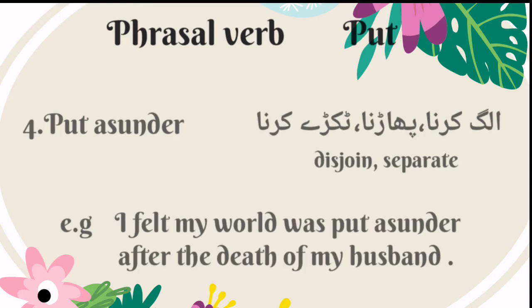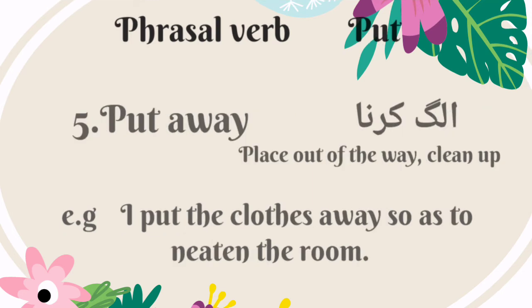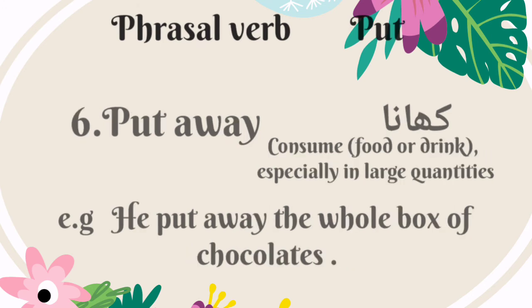The fourth phrasal verb is 'put asunder.' It means to disjoin or separate — Urdu mein is ka matlab hai alag karna, phadna ya tukde karna. For example: I felt my world was put asunder after the death of my husband. The fifth phrasal verb is 'put away.' It means place out of the way or clean up — Urdu mein is ka matlab hai alag karna. For example: I put the clothes away so as to neaten the room. 'Put away' also means to consume food or drink in large quantities — for example: he put away the whole box of chocolates.